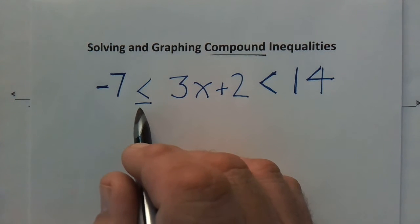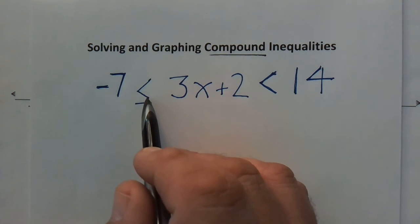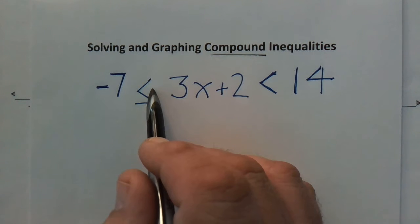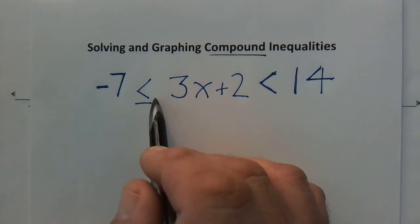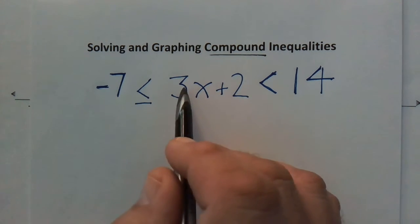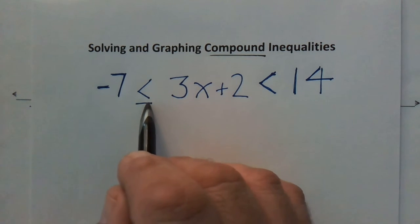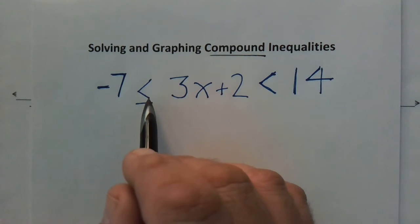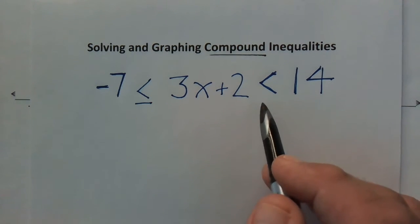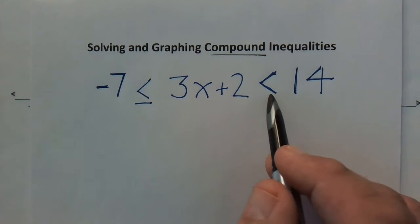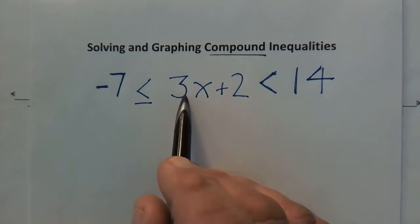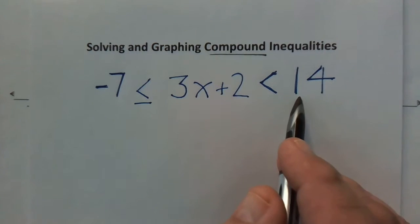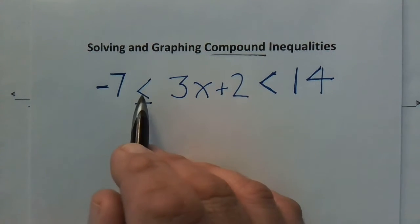As a refresher, we read inequalities using the alligator analogy — the alligator always wants to eat the largest morsel. If the mouth opens this way, this side is greater than and this side is less than. If it has a line underneath, it also means equal to. This one over here does not have a line underneath, so it's a pure inequality. So we read this side as less than that side, and this side as less than or equal to.